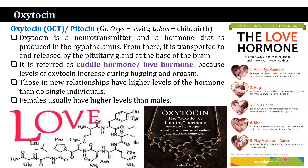Now, oxytocin — also known as pitocin. 'Oxy' means swift and 'tocos' means childbirth. Oxytocin is a neurotransmitter and a hormone produced in the hypothalamus, from where it is transported to and secreted by the pituitary gland at the base of the brain. It is referred to as the cuddle hormone or love hormone because levels of oxytocin increase during cuddling and orgasm. Those in new relationships have higher levels of oxytocin than single individuals, and females usually have higher levels than males.